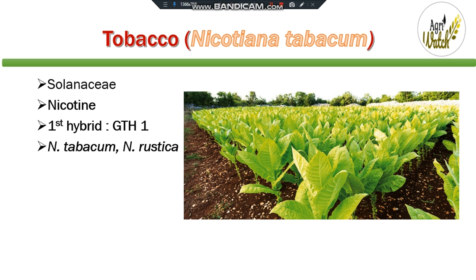The first hybrid variety of tobacco in India is GTH1. Indian tobacco has two cultivated species; both are tetraploid, that is chromosome number 2n equal to 48. The first one is Nicotiana tabacum, with plant height of 150 to 250 cm, large and narrow leaves, and nicotine content of 0.5 to 5.5%, mainly used for smoking and chewing. The next one is Nicotiana rustica, which is smaller, with nicotine content of 3.5 to 8%, and is used for hookah, chewing and snuff purpose. It is mostly grown on heavy soils.